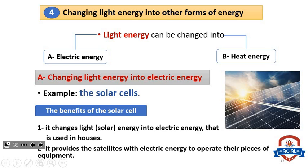Number four: changing light energy into other forms of energy. Light energy can be changed into electric energy and heat energy. Number one: changing light energy into electric energy. For example, solar cells. The solar cell changes light energy into electric energy that is used in houses, and it provides satellites with electric energy to operate their equipment.